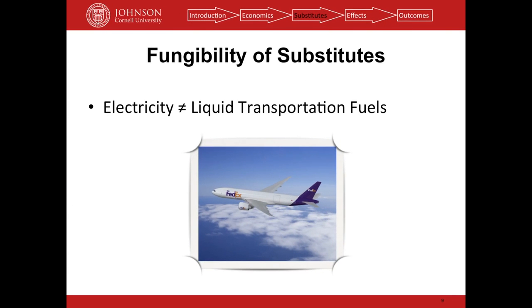There are a lot of problems with switching over — that's where all the worry about peak oil comes in. First and foremost is the fungibility of the substitutes. Electricity is not a liquid transportation fuel, and what we're reaching is a peak in oil production which we use to produce liquid transportation fuels. We have trillions of dollars in infrastructure — planes, trains, cars, trucks, and ships — that all run on liquid transportation fuel. Switching that infrastructure to electricity would be a tremendous undertaking.